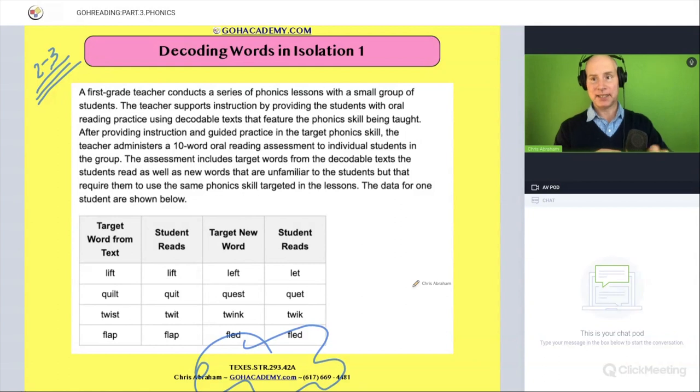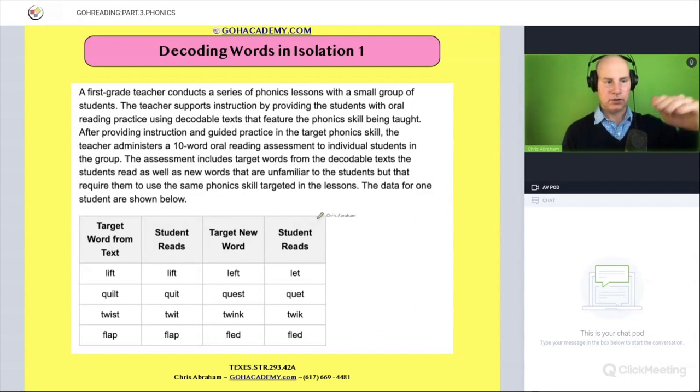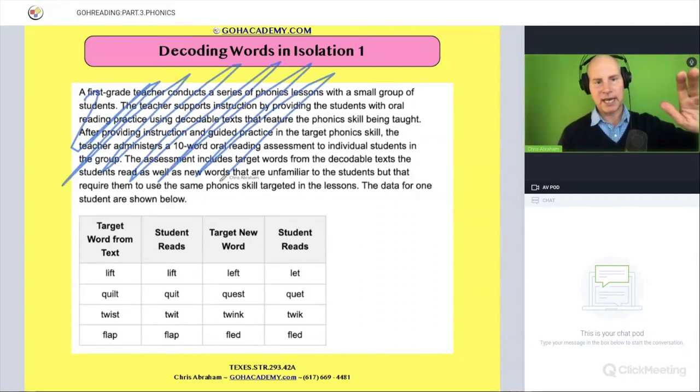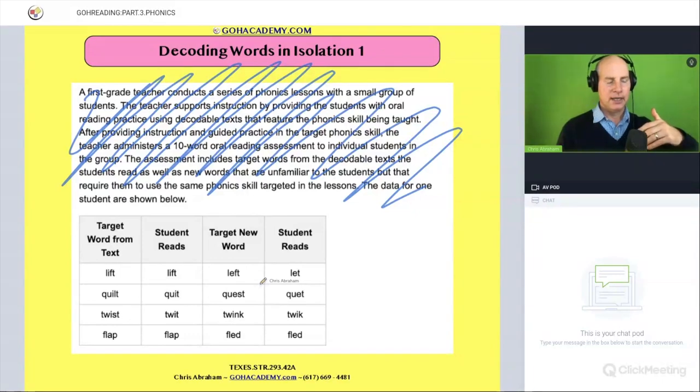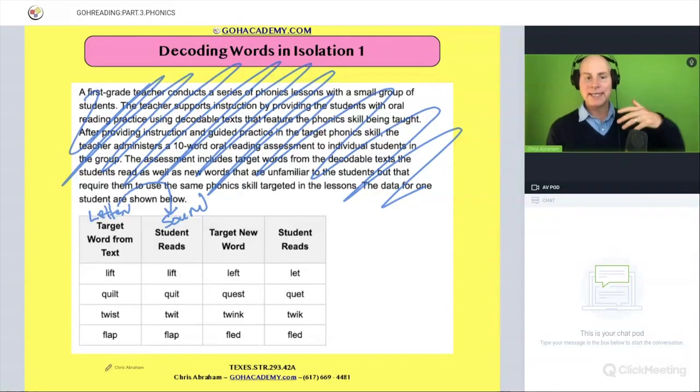Now, if we just glance at the picture real quick, let me clear this off. Just glance at the picture, don't even look at that for a moment. It says target word from the text, student reads. So what that means is there were some words that the student took and they read out loud. They turned them into sounds. They're doing some type of decoding assessment.